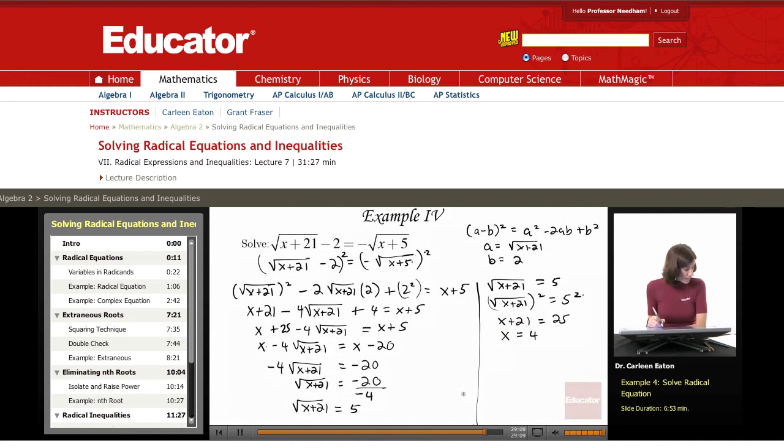Okay, so I came up with this solution that x equals 4. And I need to check that in the original. So check by inserting 4 for each x in the original. That's going to give me square root of 4 plus 21 minus 2 equals negative, and then that's the square root of 4 plus 5.